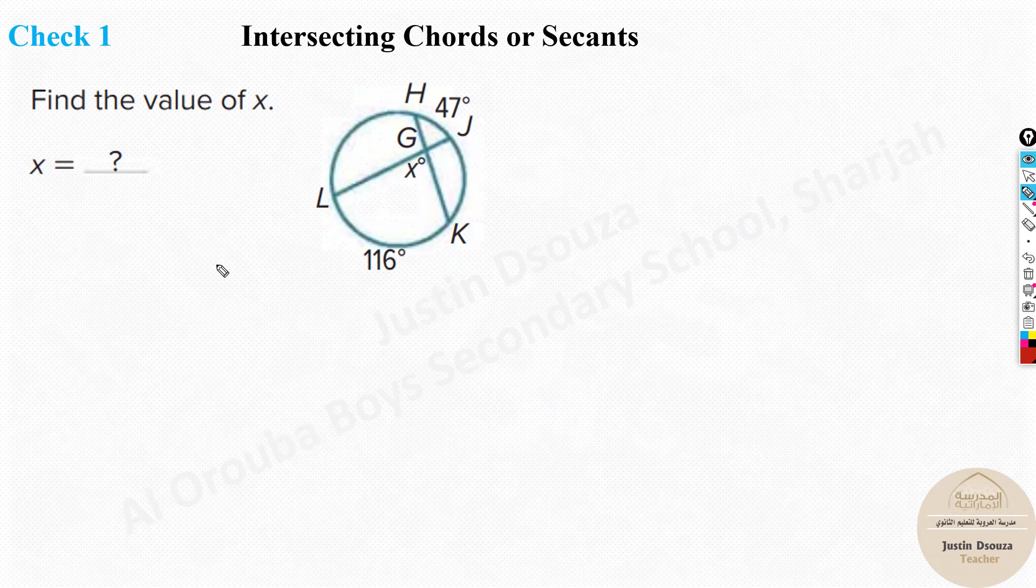Over here, they have again asked you to find X, but it's very straightforward because the opposite arcs, both the arcs are known over here. So X will be equal to half of 116 plus 47 degrees. So that will be equal to 116 plus 47 would be 163. Half of that, that will be 81.5 because 80 is 160 and 3 is 1.5. So it's 81.5 degrees. That's it.